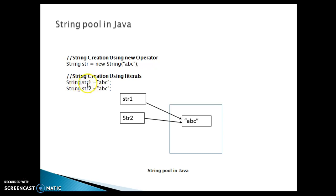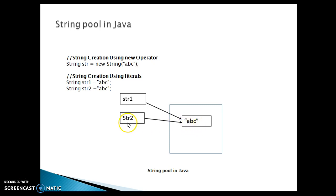Initially, when you create a string using str equal to 'abc', that will be added into the pool. When you try to create another string with the same string literal, JVM will check whether a string is already available in the string constant pool with the same value. If it is there, the same reference will be returned to str2, so a new object will not be created.